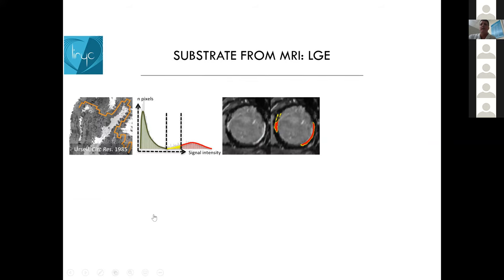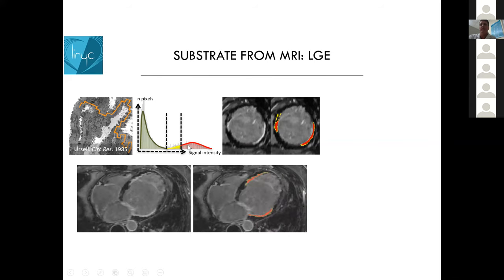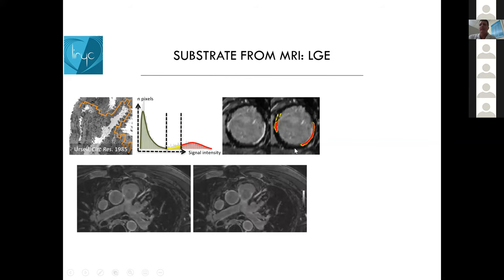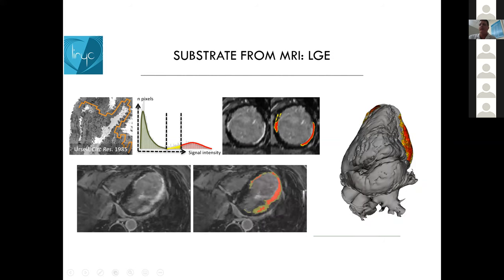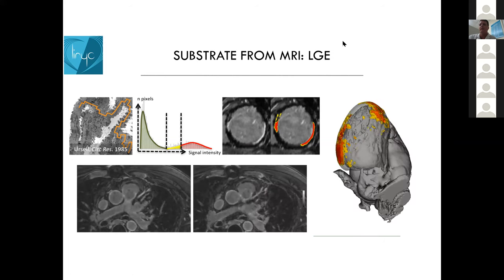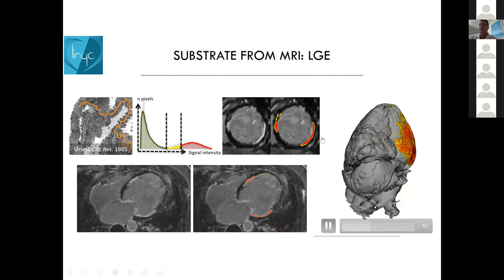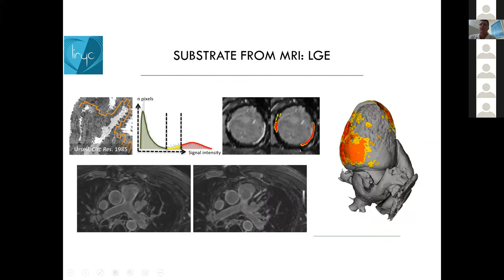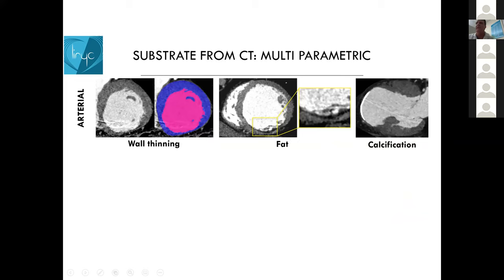MRI with late enhancement, looking at signal intensity, gives us a sense of scarring. But this is not easily done. In a research protocol it looks great, but in the real world it's much more challenging. The multi-parametric imaging available from CT is particularly helpful.